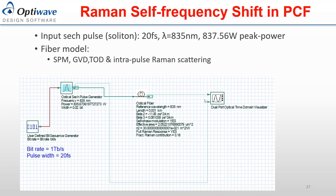We repeat the measurement to compare with published work. We have 20 femtosecond soliton pulses at 835 nanometers with a peak power of 837 watts. Once we set up the transmission and fiber parameters — beta 2 of minus 11.83 ps²/km and beta 3 of 0.083 ps³/km — along with the nonlinear refractive index and other parameters, we run the simulation in OptiSystem.